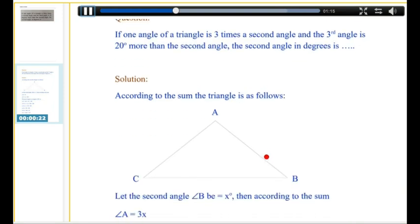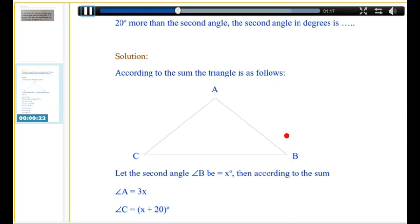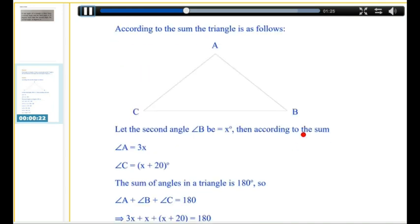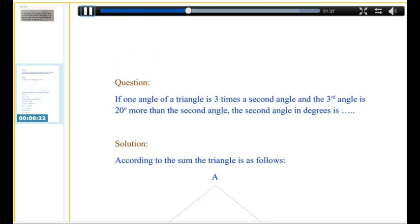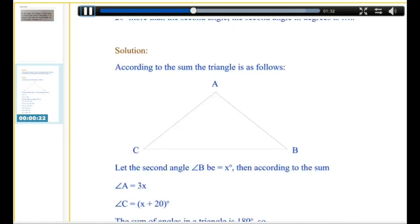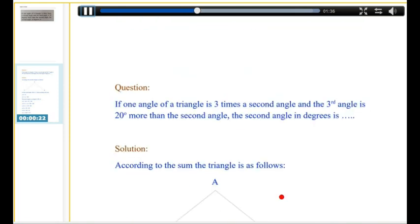Now, we draw the triangle ABC, and we mark the second angle B as x degrees. Then, according to the sum, the one angle is three times the second angle, so angle A is equal to 3x.